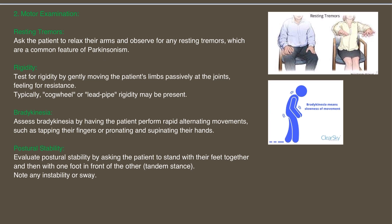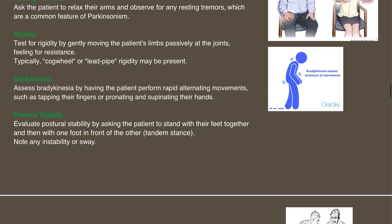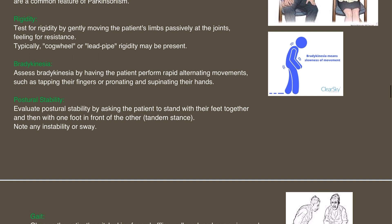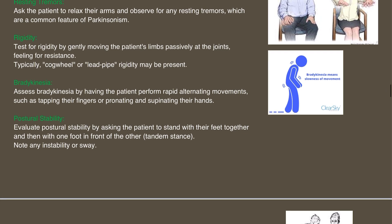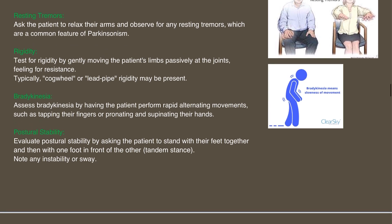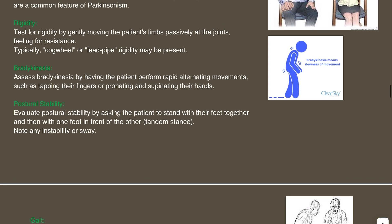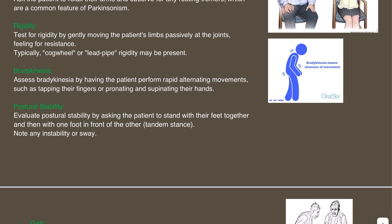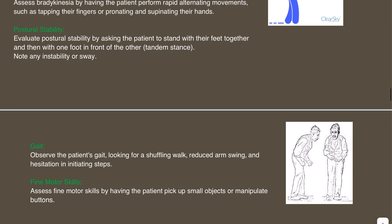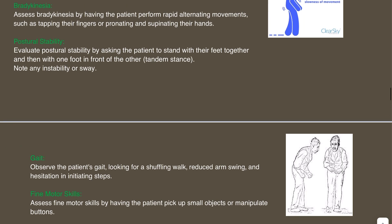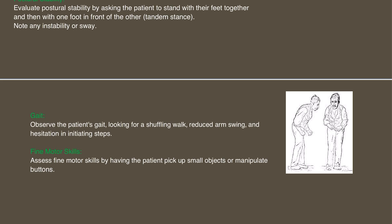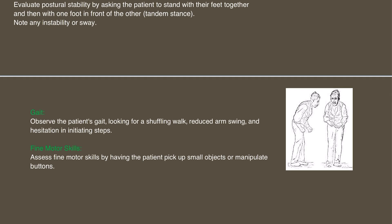In the motor examination, assess rigidity by gently moving the patient's limbs passively at the joints, feeling for resistance — typically cogwheel or lead pipe rigidity may be present. For bradykinesia, have the patient perform rapid alternating movements such as tapping their fingers or pronating and supinating their hands. Check postural stability by asking the patient to stand with feet together and then in tandem stance, noting any instability or sway. Observe the patient's gait for a shuffling walk, reduced arm swing, and hesitation in initiating steps. Assess fine motor skills by having the patient pick up small objects or manipulate buttons.